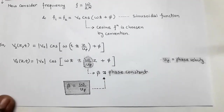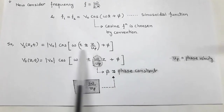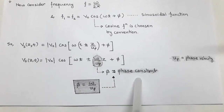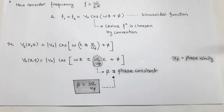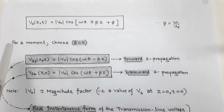The positive sign is for backward propagation and the negative sign is for forward propagation. Opening the bracket gives ωt ± (ω/U_P)·Z, where ω/U_P is called the phase constant, denoted by β. So β = ω/U_P, and the expected sinusoidal solution is V_S(Z, T) = |V₀| cos(ωt ± βz + φ).